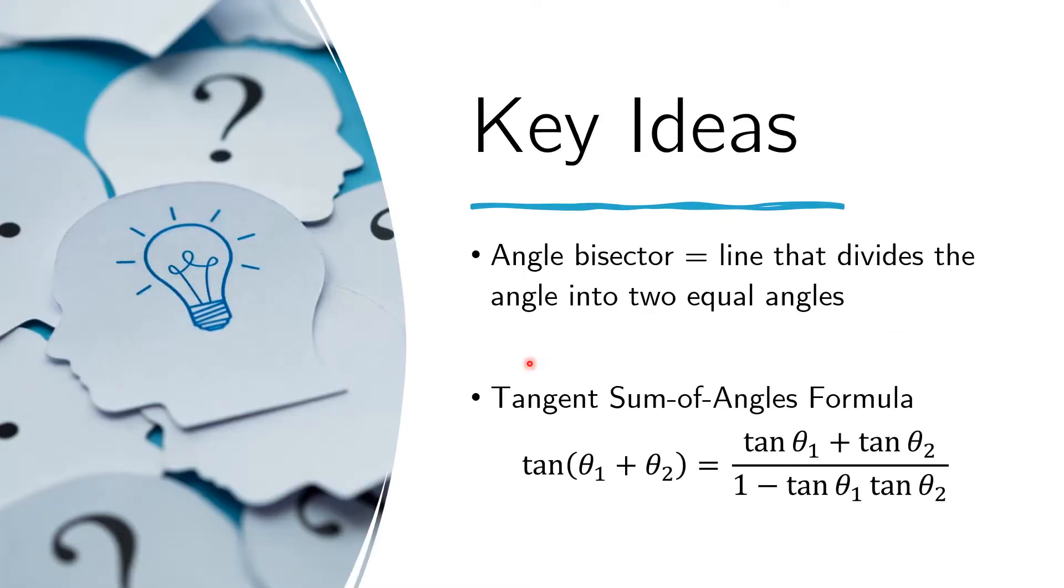Let us recall that the angle bisector of an angle is the line that divides the angle into two equal angles. And also let us recall the tangent sum angle formula. It is tan(θ₁ + θ₂) equals (tan θ₁ + tan θ₂) all over (1 minus tan θ₁ times tan θ₂).